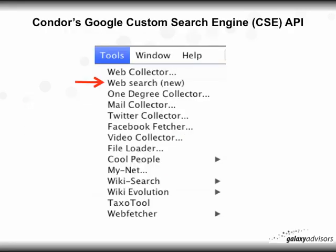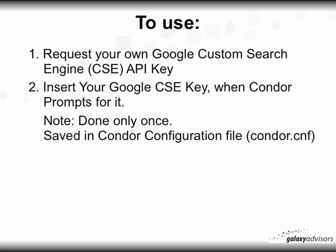In Condor's new 2.66 version there is something new under Tools called Web Search, and that is the new Google Custom Search Engine API. To obtain that API and have it used, there are really two simple steps.